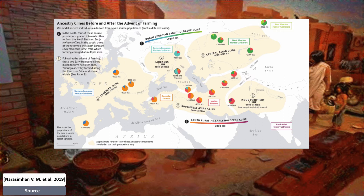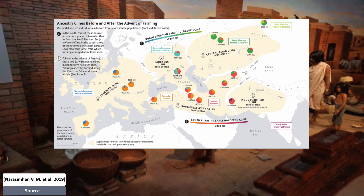In Europe, the European clines are largely made up of Anatolian farmer ancestry with European hunter-gatherer admixture. And in North India, the Indus periphery cline evolves, largely made up of Iranian farmers with some South Asian hunter-gatherer admixture. On the steppes in Central Eurasia, however, the Aboriginal hunter-gatherer ancestry holds its ground, with some admixture from Anatolian, Caucasian, and Iranian farmers, now forming the Central Asian and Caucasus Yamnaya clines. This development takes place between 7,000 and 4,500 years ago.